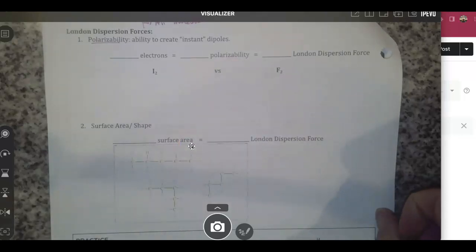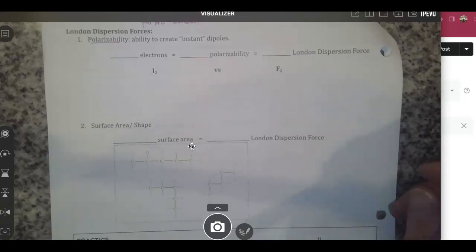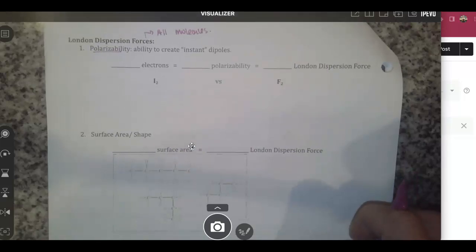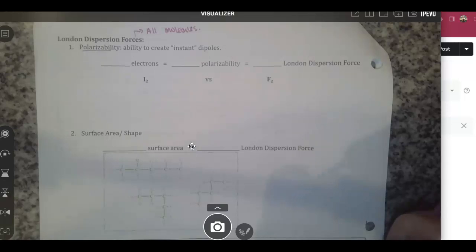We're going to look a little bit more at London dispersion forces because London dispersion forces happen in all molecules. All molecules have electrons, and those electrons can be moving around and can create momentary dipoles, which allow them to attract to other molecules.